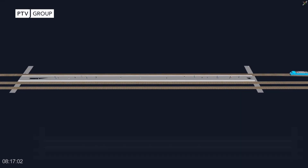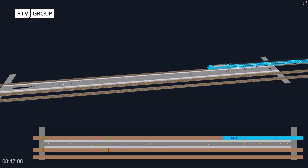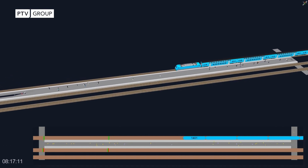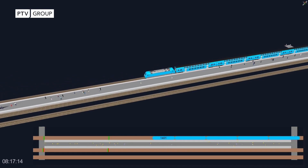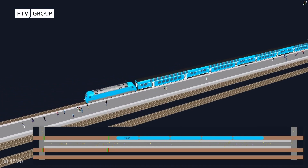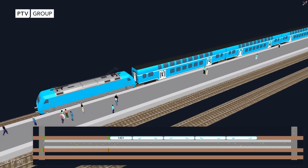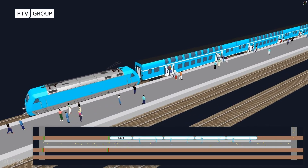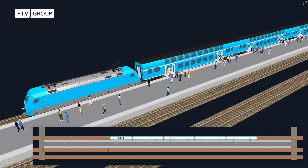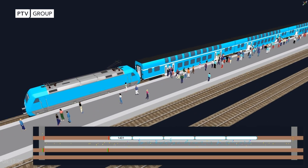Visim helps you ensure the free and safe flow of pedestrians in all areas of the station: the main hall, the underpasses and corridors, stairs and along the train platforms.